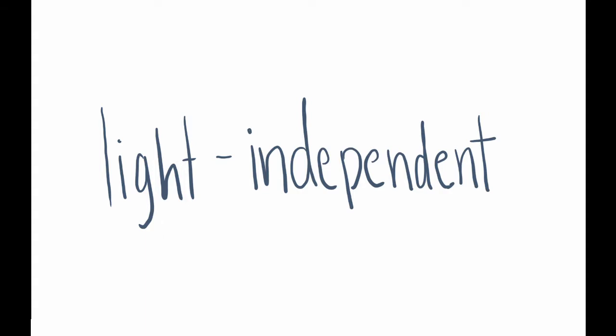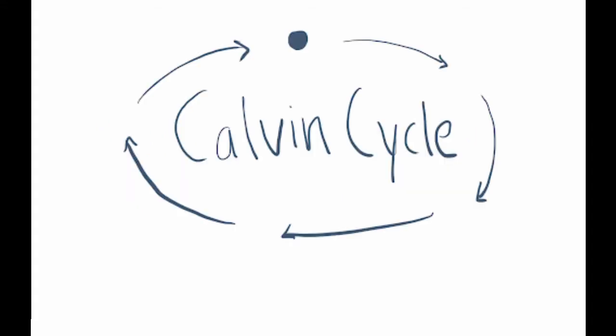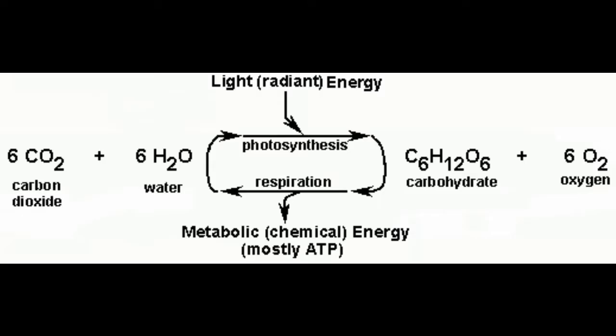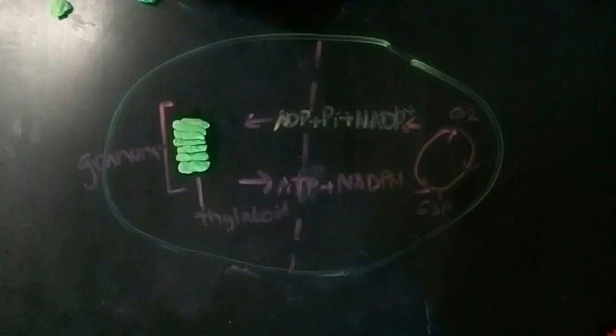Light-dependent reactions have byproducts of ATP and NADPH, which are essential reactants of the light-independent cycle, also known as the Calvin cycle. ATP, the storage of light energy, is produced in light-dependent reactions. ATP is used to create glucose in the Calvin cycle. The Calvin cycle stores energy into organic products for the plant to use at a later time.